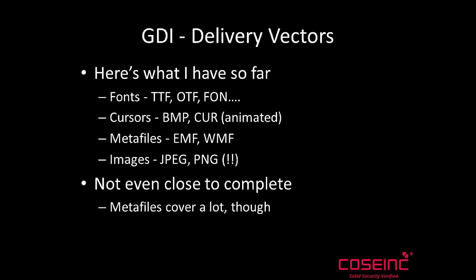So what have I got? I've got some actual vectors. We can do fonts - TTF, OTF, dot font, pretty much any kind of font that Windows recognizes. Cursors are cool - not so much the bitmap, but animated cursors, that can do stuff. Metafiles are great because a metafile covers a lot of surface that you wouldn't otherwise cover. Images - turns out you can do JPEG and PNG in the kernel. Makes total sense. Why would you not do that? These are simple formats, we should parse them as quickly as possible.